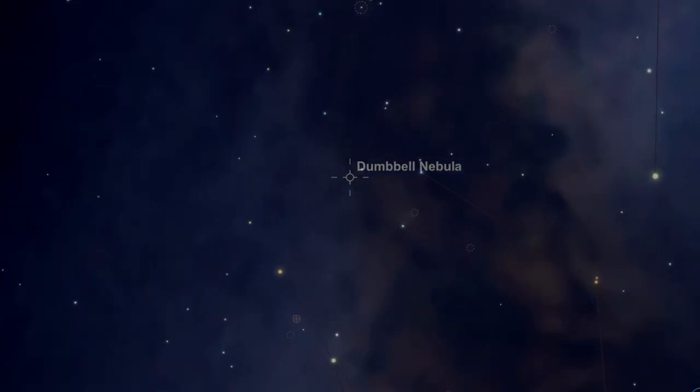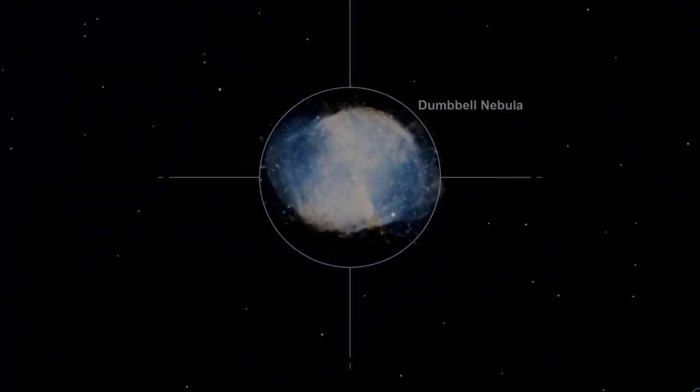M27 is a beautiful planetary nebula, definitely one of my favourites. It's a really bright object, easy to see in binoculars, and in the small telescope you can see that sort of apple core shape, this dumbbell shape that gives it its name.